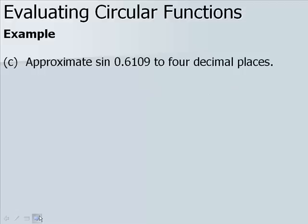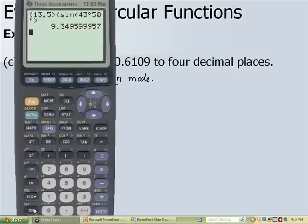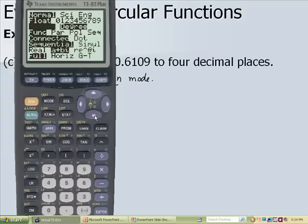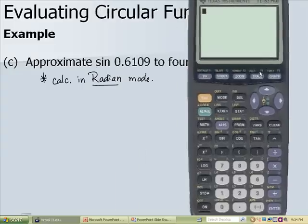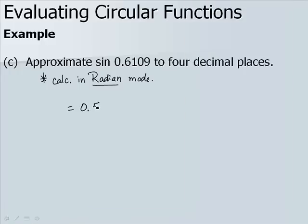Now let's approximate the sine of 0.6109 to 4 decimal places. The key is to have your calculator in radian mode. Switching to radian mode and computing sine of 0.6109, we get 0.5736.